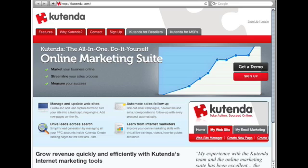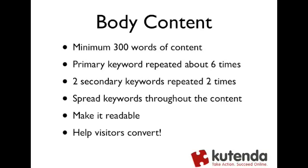Now the body content - this is the primary content within the page itself. The rules around body content are pretty straightforward. Minimum of 300 words of content on that page, and the reason that's important is search engines are looking for good content on the web and they're going to rank that good content better than what they consider poor content. One of the indicators to them is the amount of text on the page itself, so 300 words is a good guideline of having meaty enough content that search engines are going to think your page is worthwhile.